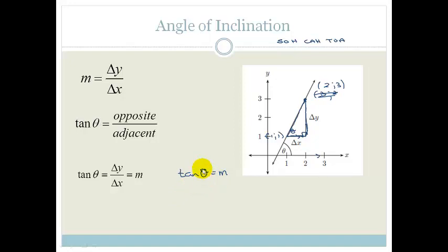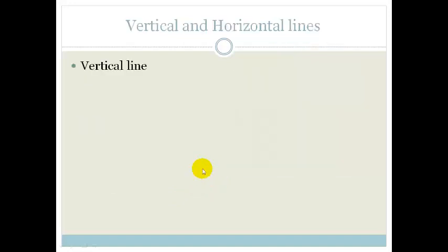Now let's look at a couple of special scenarios. Let's look at vertical lines. A vertical line has got an angle of inclination of 90 degrees, which makes sense because if this is my y axis and this is my x axis and I draw a line that's perpendicular, let's say for example x equals 2, then do you agree that this is perpendicular to the x axis? So therefore it has an angle of inclination of 90 degrees.